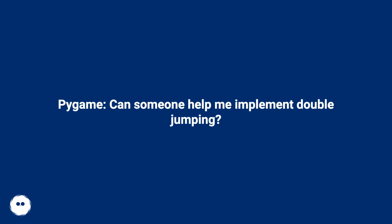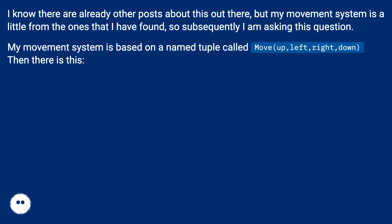Pygame — can someone help me implement double jumping? I know there are already other posts about this out there, but my movement system is a little different from the ones that I have found, so subsequently I am asking this question.